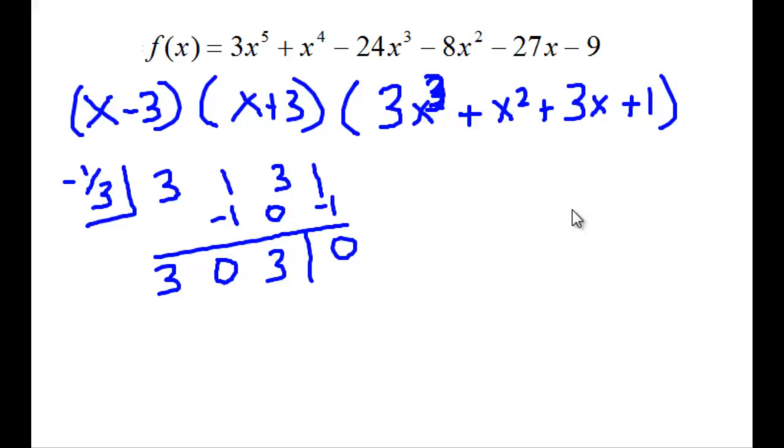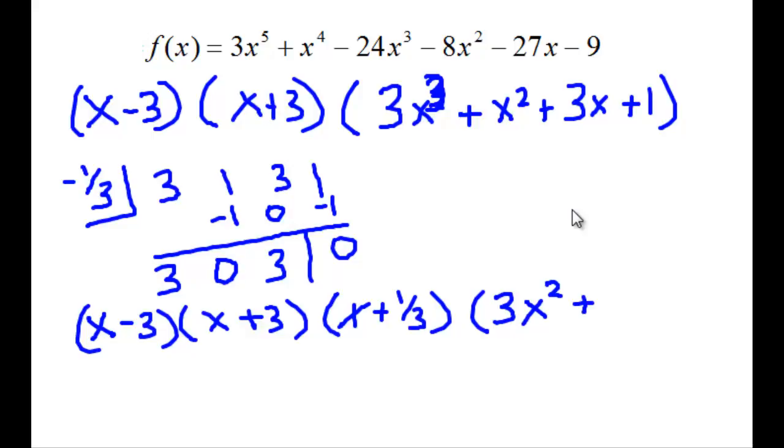So now we've factored it down to x minus 3, x plus 3, x plus 1/3, and 3x squared plus 3. 3x squared plus 3 can be factored. We can factor out the 3.